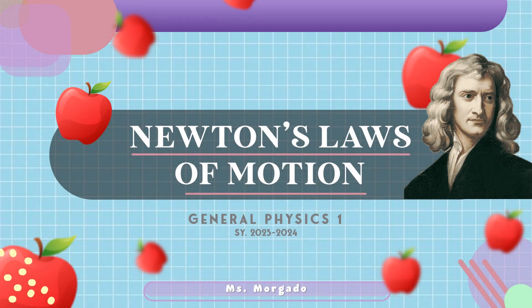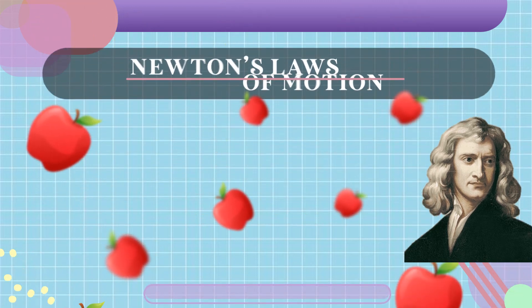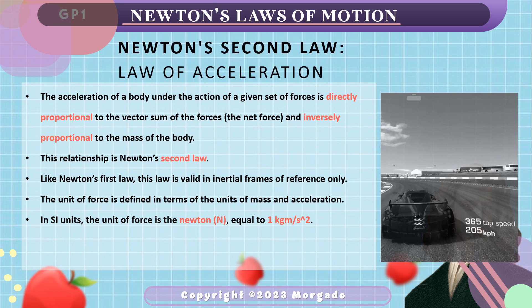Hi class, today I will be discussing the second law of motion, or law of acceleration, since we already discussed the first law in class. Acceleration is summarized as: the acceleration of a body under the action of a given set of forces is directly proportional to the vector sum of the forces or the net force, and inversely proportional to the mass of the body. This is simply the relationship of acceleration to force and mass.